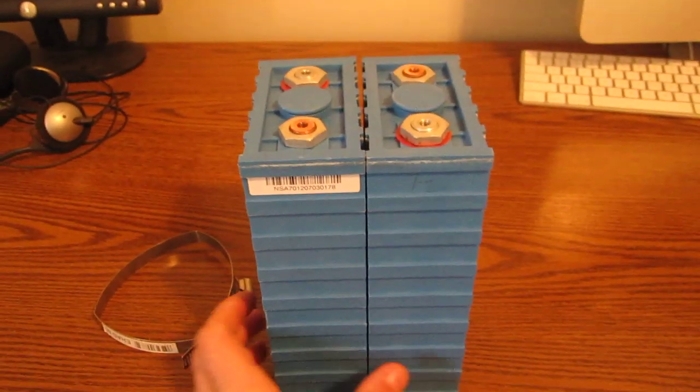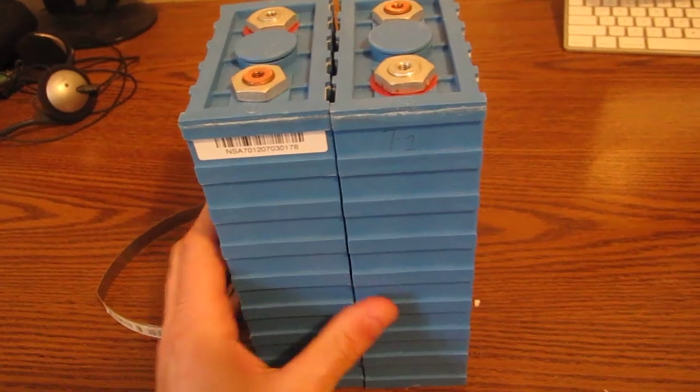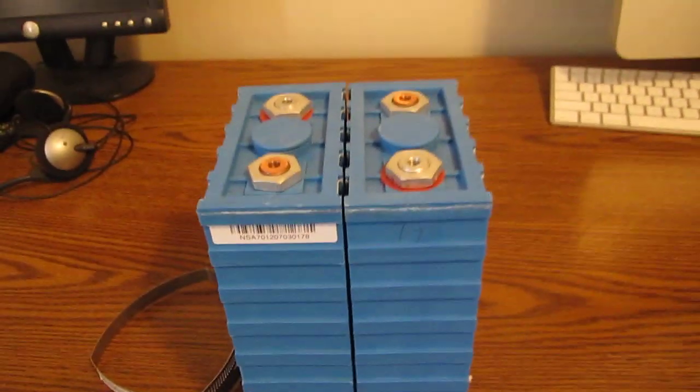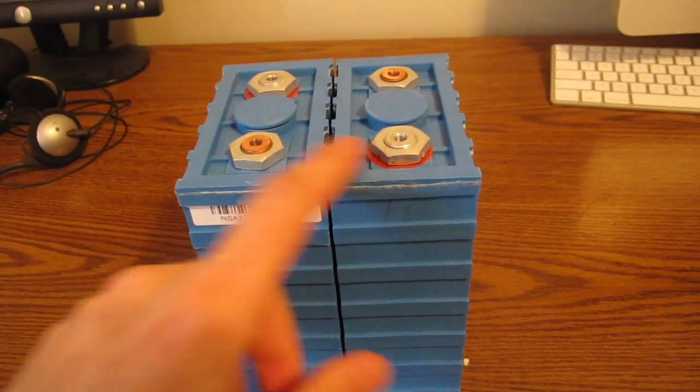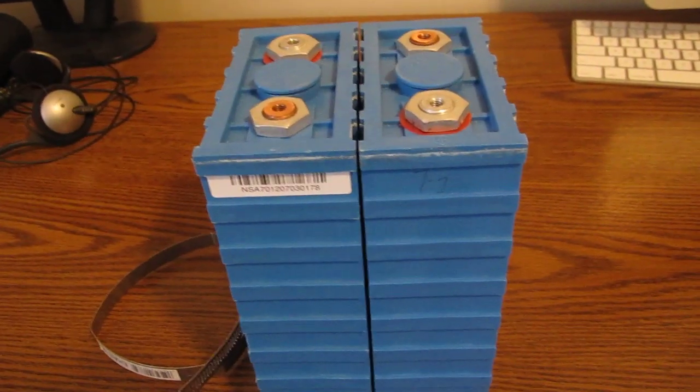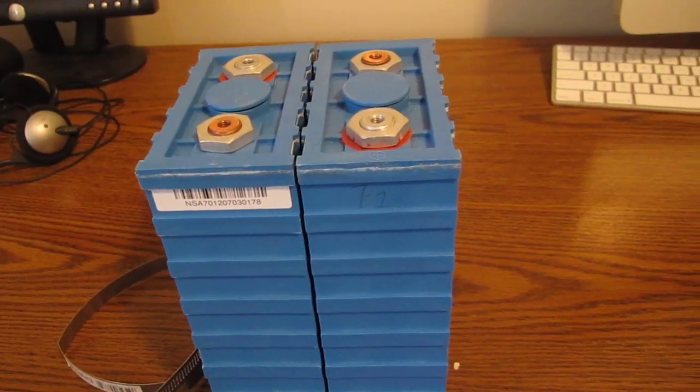It turns out the distributor that I got these cells from made a mistake and didn't send me the interconnect bars. I talked to them and they sent me the interconnect bars. They're in the mail right now, they'll get to me eventually. But I don't need those in any real hurry.